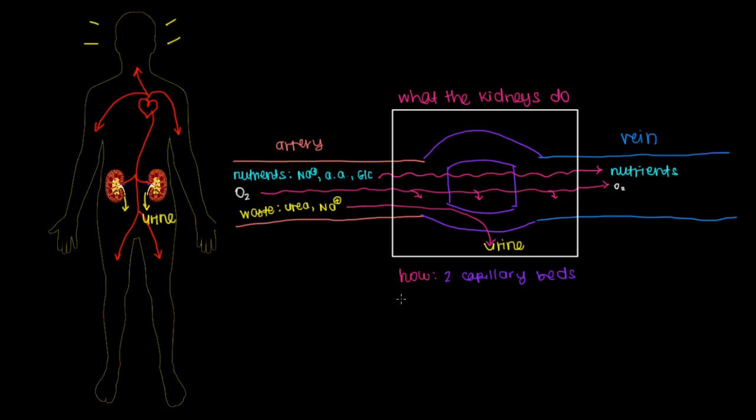And these capillary beds have two fancy names. The first one is called the vasa recta. And that's mainly to give oxygen to the kidneys. The other set of capillaries are called peritubular capillaries. And we'll talk way more into detail about these peritubular capillaries. And these are the guys that are mainly going to be responsible for collecting nutrients that our kidneys will filter. And we'll talk more about that process in the next few videos.